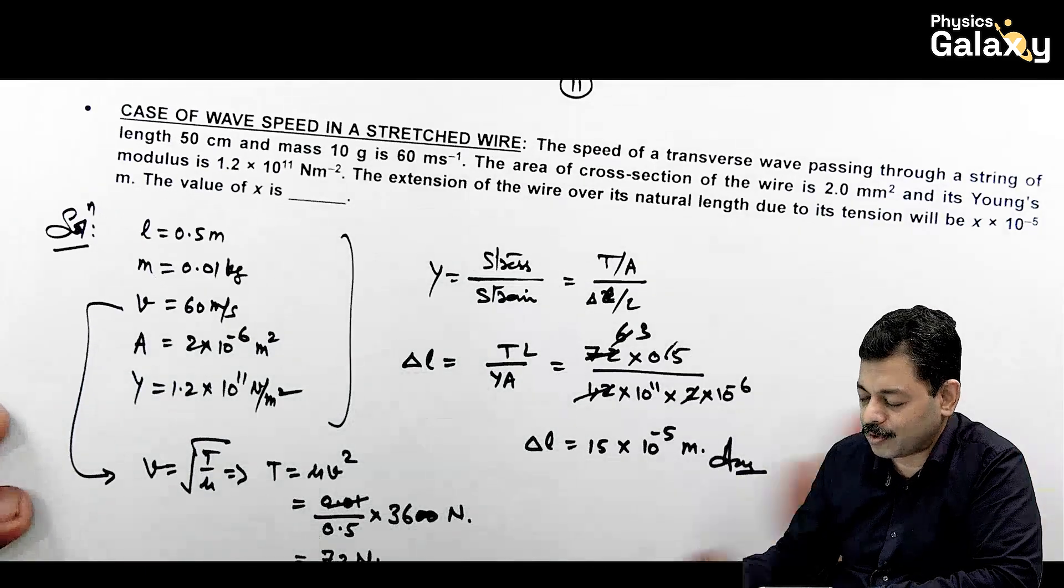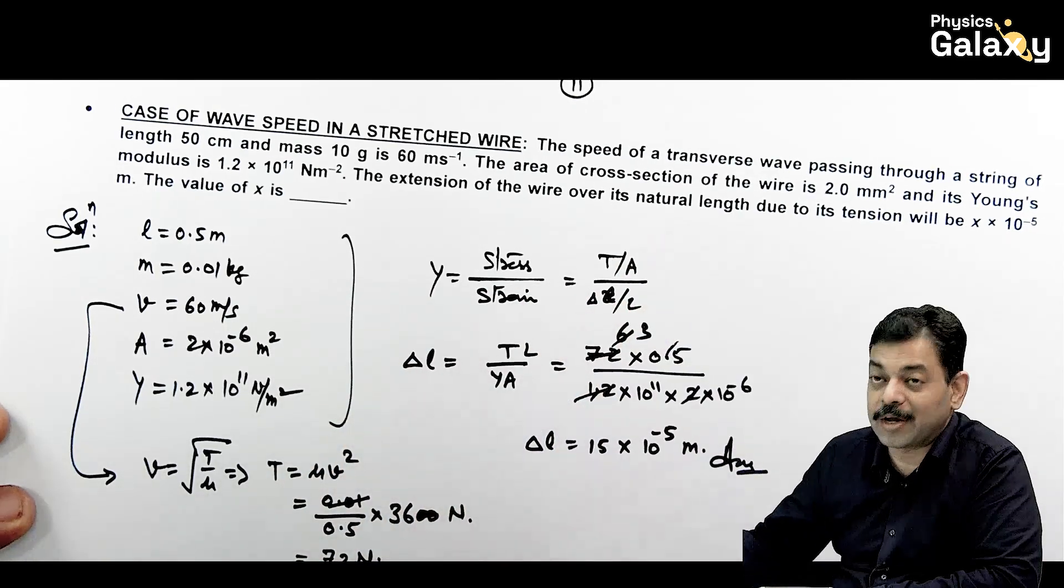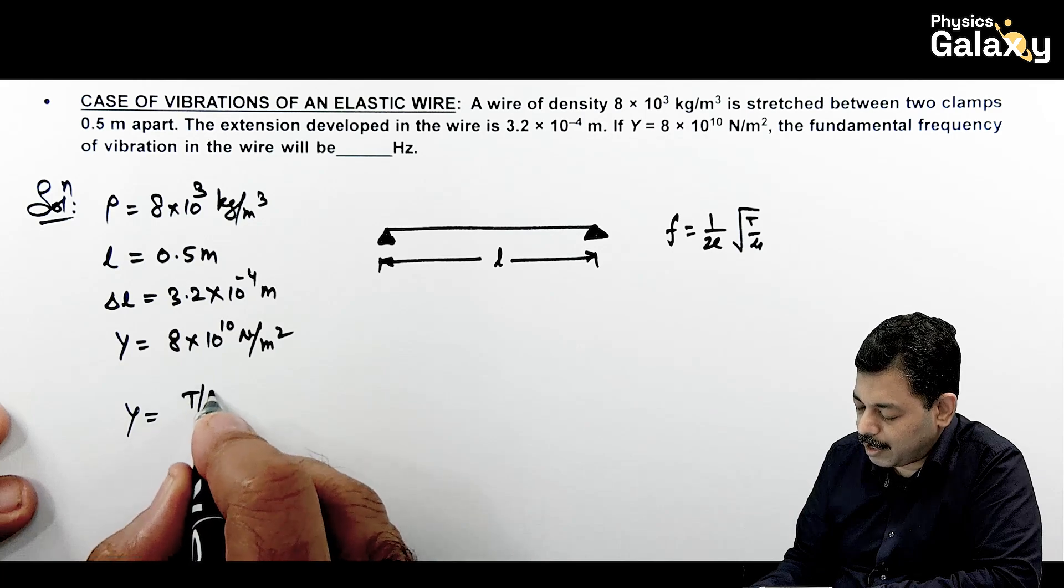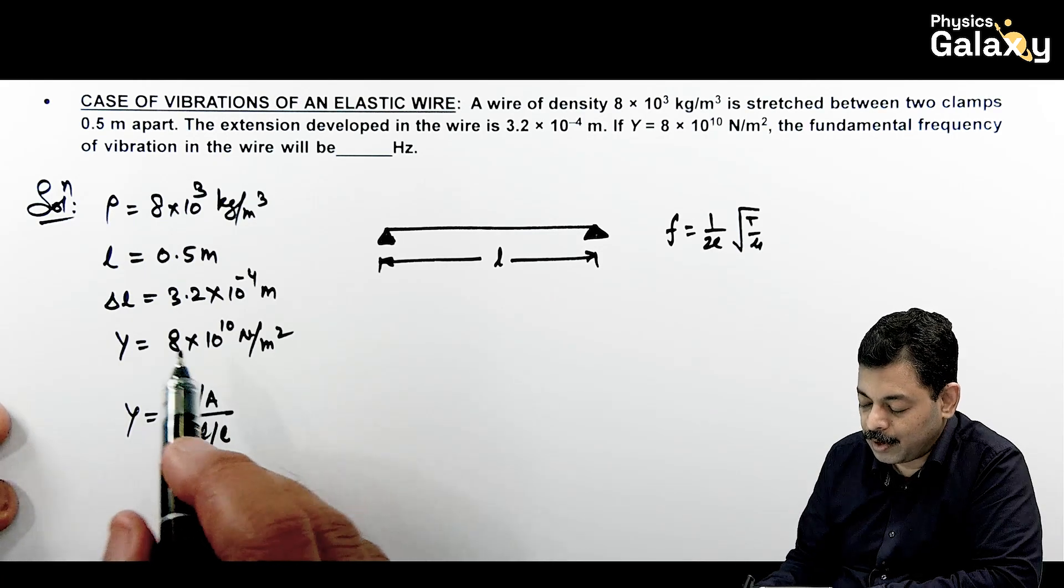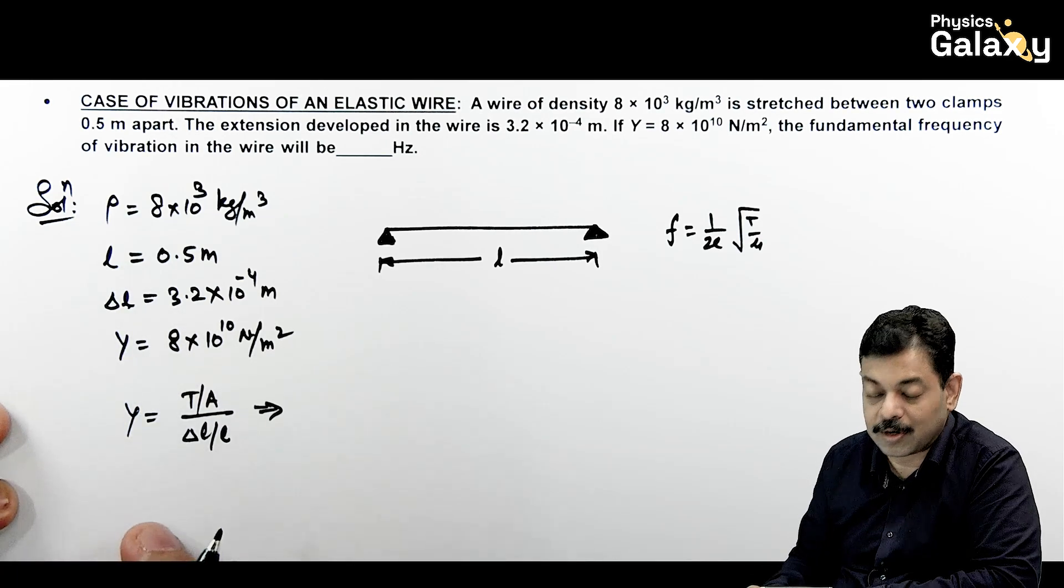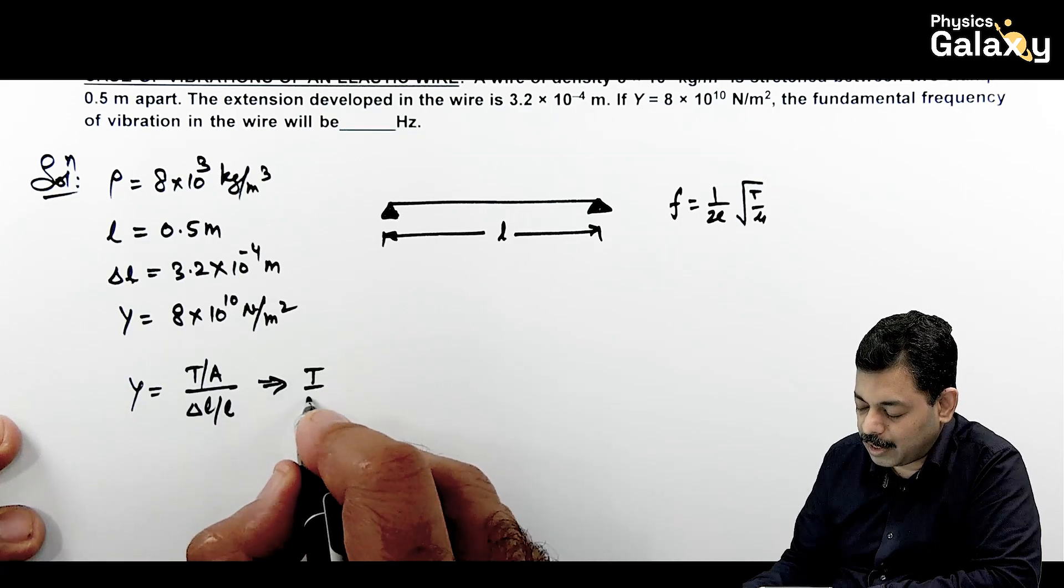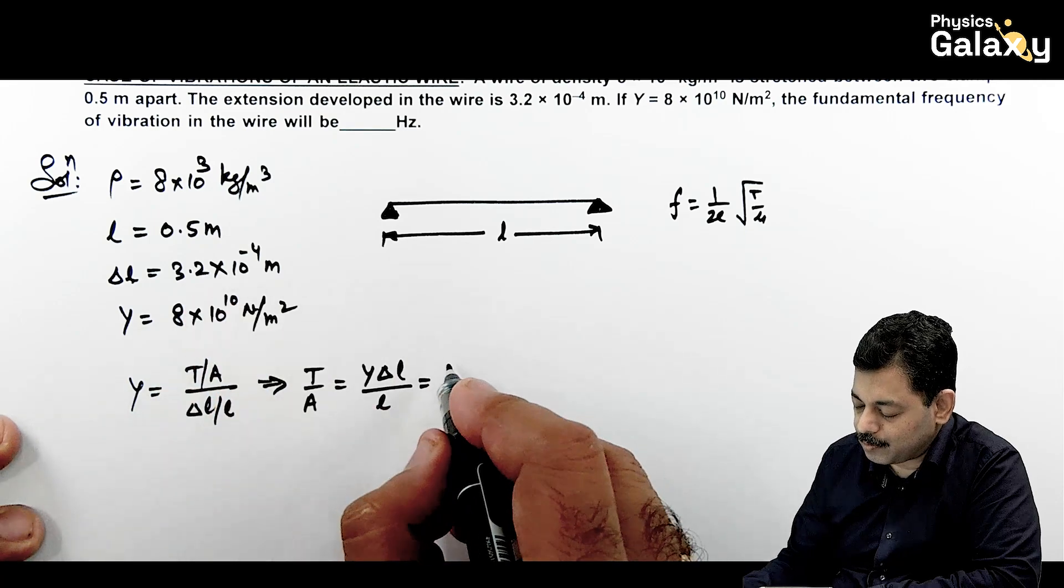Here, Young modulus we can write as T by A upon delta l by l. In the previous case, what we did, it is T by A divided by delta l by l. Difference is that here delta l, l, Y are given, so from this you can calculate T by A. Just have a look. So you are getting T by A value which equals Y delta l by l, and that comes out to be 8 into 10 to power 10 divided by length is 0.5 multiplied by delta l is 3.2 into 10 to power minus 4.